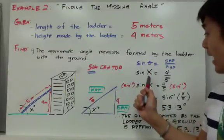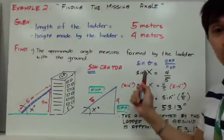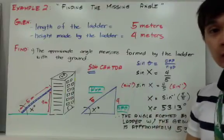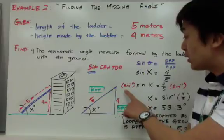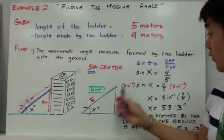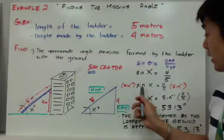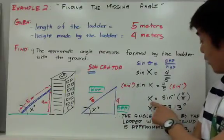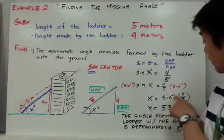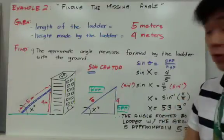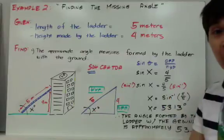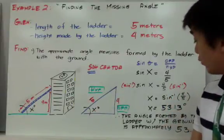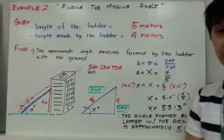This gives us sine x equals 4 over 5, where x is what we're looking for. Since we need to solve for x, we need to get rid of sine by multiplying both sides by sine inverse. Sine inverse and sine cancel out, leaving x equals sine inverse of 4 over 5. Using your calculator, sine inverse of 4 over 5 gives you 53.13 degrees. Make sure your calculator is in degree mode.